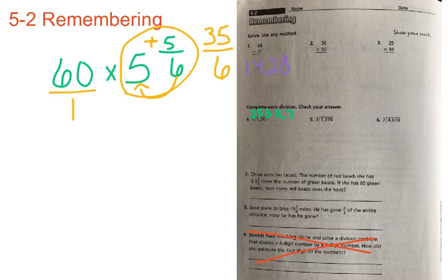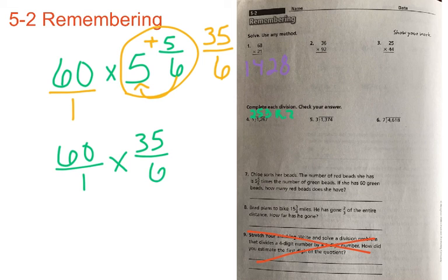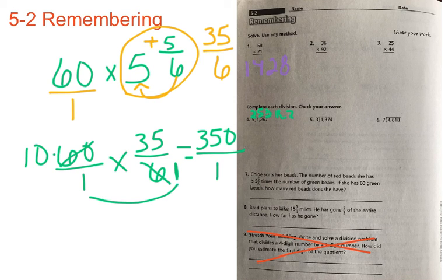And in order to write 60 as a fraction, it's 60 over 1. So now what we have is 60 over 1 times 35 over 6. And we can go ahead and cross reduce here because we can see a relationship between 60 and 6. 6 can go into 6 one time and 6 can go into 60 ten times. So now we have 10 times 35 which is 350 and 1 times 1 which is 1.